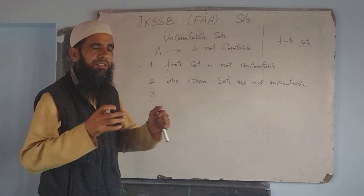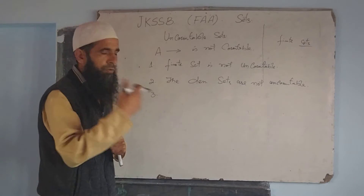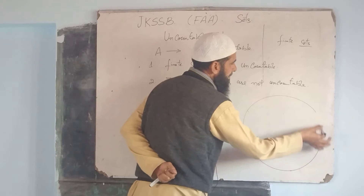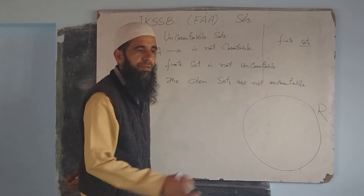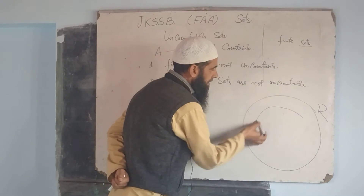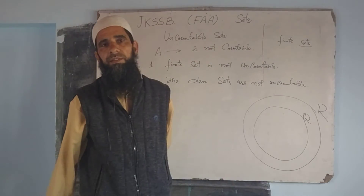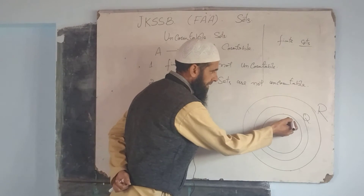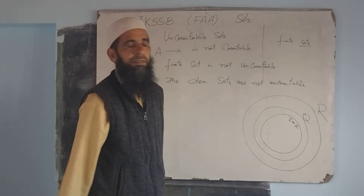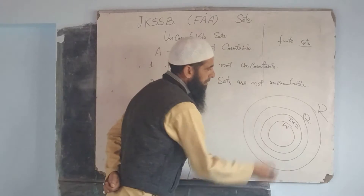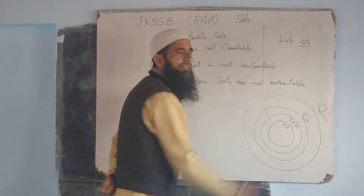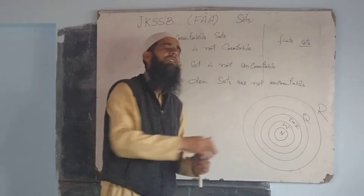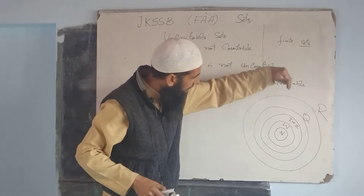In the number system, the set of real numbers R contains the rational numbers as a subset. Integers are a subset of rational numbers. Whole numbers W are a subset of all these, and natural numbers are a subset of all these sets. R is the superset of all these sets.